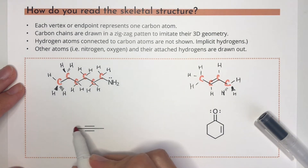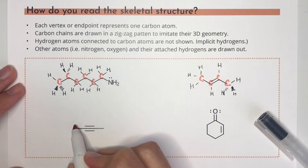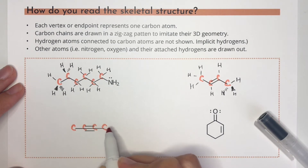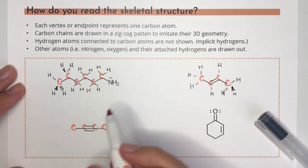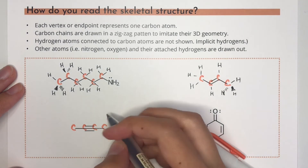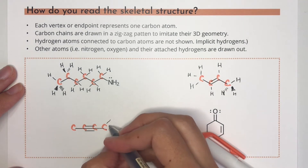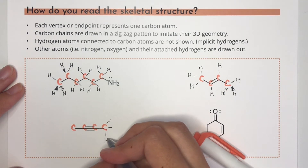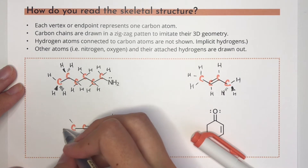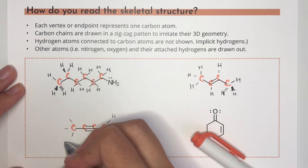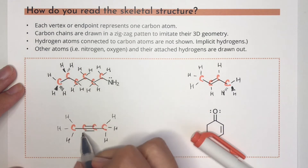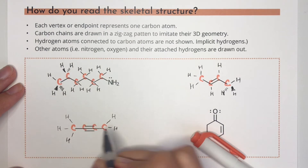This alkyne also has four carbon atoms. The points on the line are harder to spot, but we need to draw it this way since triply bonded carbons are sp hybridized and they have a linear geometry. Just like the last example, the outer carbons have three implicit hydrogens, but the triply bonded carbons have none — they already had four bonds each.